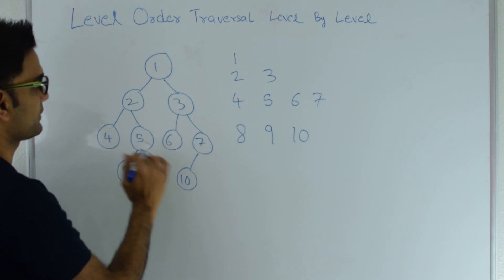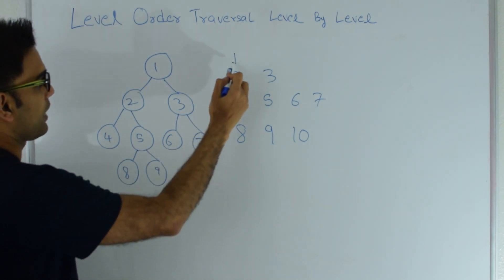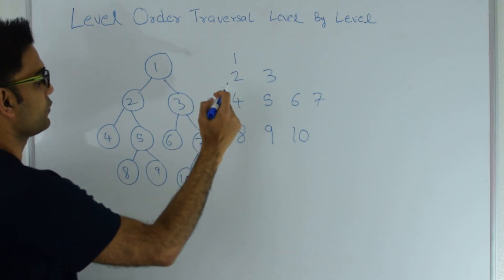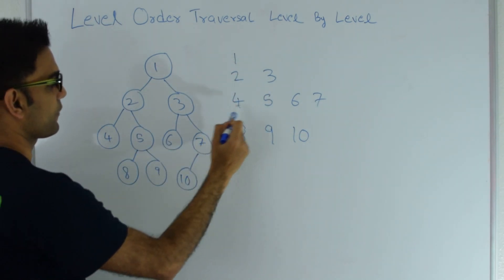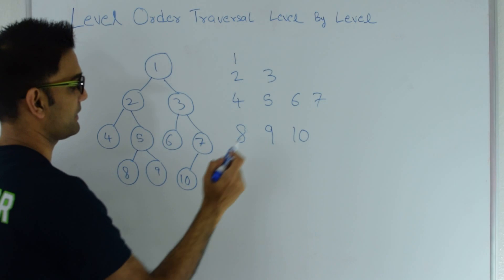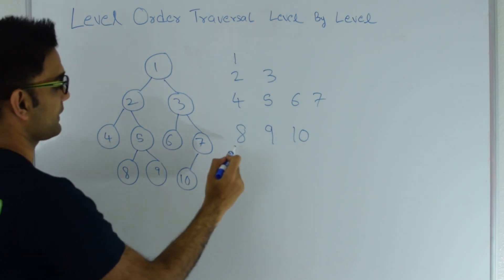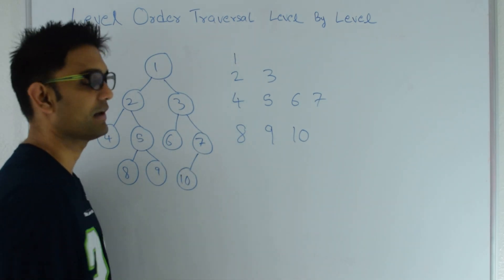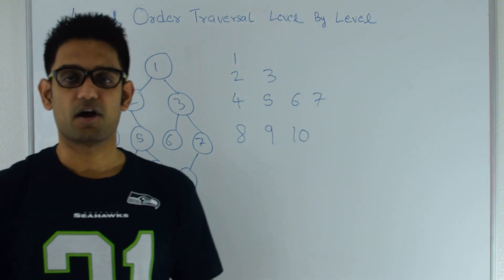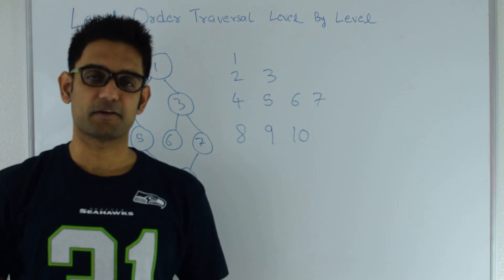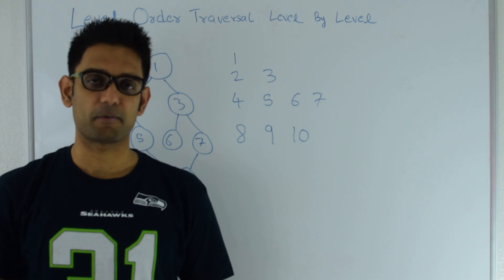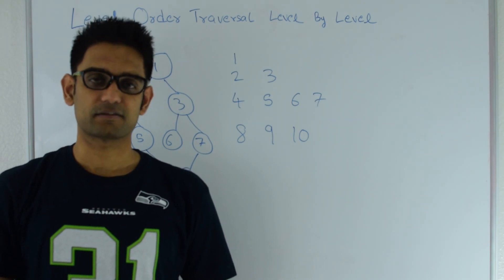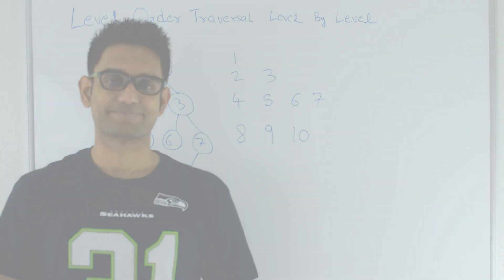So the output for this program should be 1, then on a new line 2, 3, then on a new line 4, 5, 6, 7, and then on a new line 8, 9 and 10. So how do we solve this? We have three different techniques to solve this problem. Let's look at them one by one.